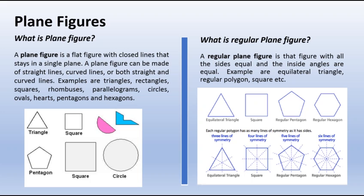Other examples include oval, pentagon, hexagon, and likewise. With this understanding, we now ask: what is a regular plane figure? A regular plane figure is a figure with all sides equal and all inside angles equal. Examples are equilateral triangle, regular polygon, and square, as you can see in the diagram showing more examples of regular plane figures.